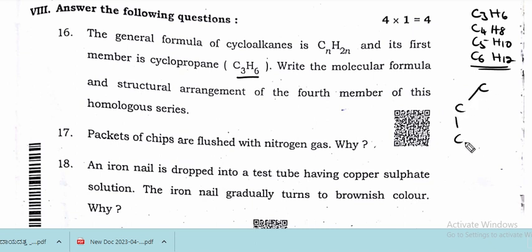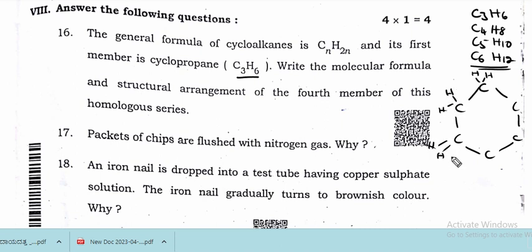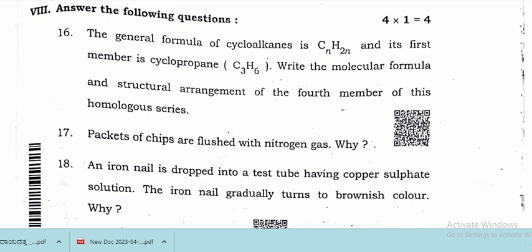For the structural arrangement of the fourth member, cyclohexane (C6H12), we write six carbon atoms arranged in a hexagon diagram. Then we place two hydrogen atoms on each carbon — two here, two here, two here, two here, two here, and two here. This is the structural arrangement of the fourth member of the cycloalkane homologous series.